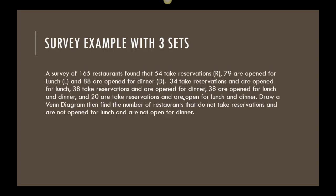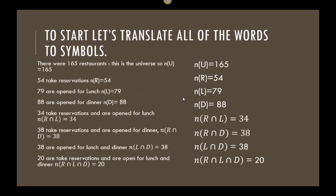So what do I want you to do? I want you to draw a Venn diagram, find the number of restaurants that do not take reservations and are not open for lunch and are not open for dinner. All right. Before we really get started with this, we need to kind of rewrite all of this information, get rid of so many of the words, and put more symbols in.